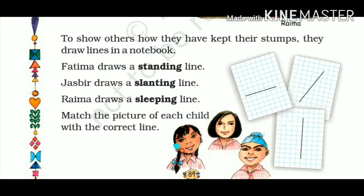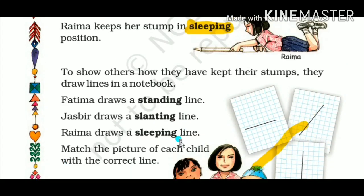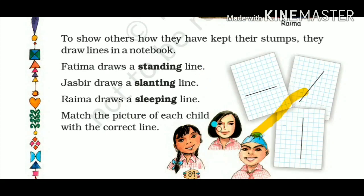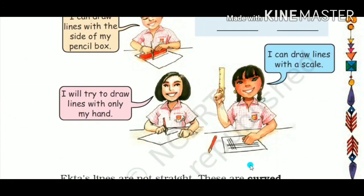You have to match the picture of each child with their correct line. Jasbir drew a slanting line, so we match Jasbir to the slanting line. Raima made a sleeping line, so we match Raima to the sleeping line. And Fatima drew the standing line, so we match Fatima to the standing line. That is how we match each child to their line.